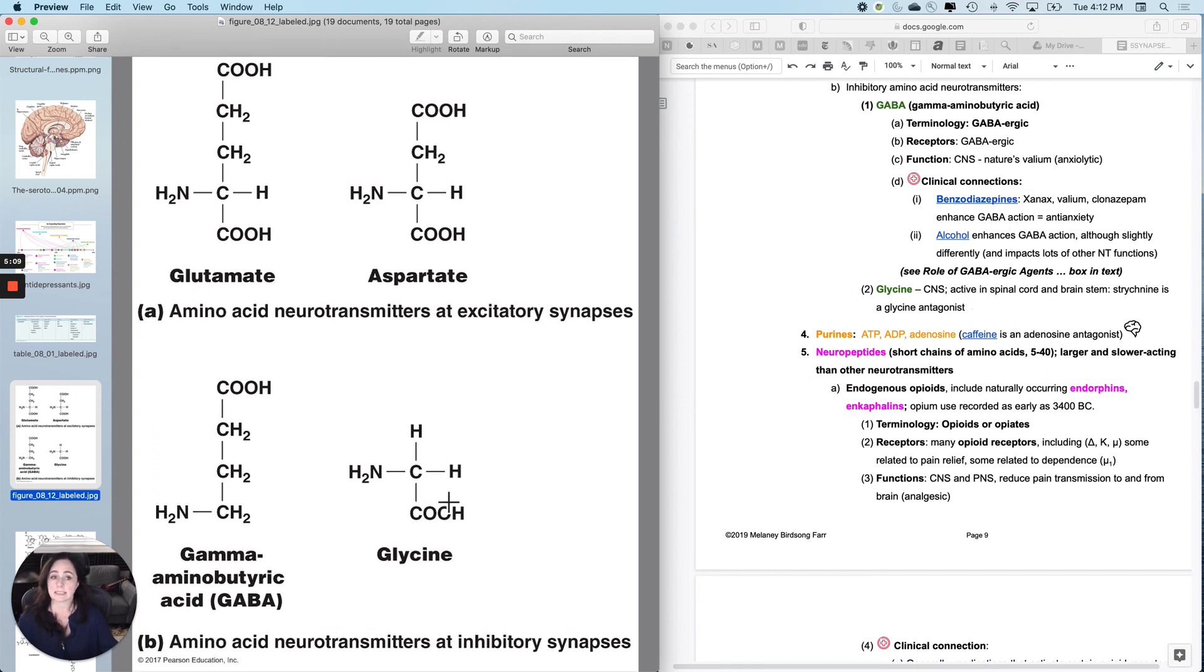And then glycine is a CNS chill out neurotransmitter as well, but it's mostly active in the spinal cord and the brainstem, not the same places as GABA. And strychnine, which is a poison, is actually a glycine antagonist. And when you block all the glycine everything kind of seizes up.